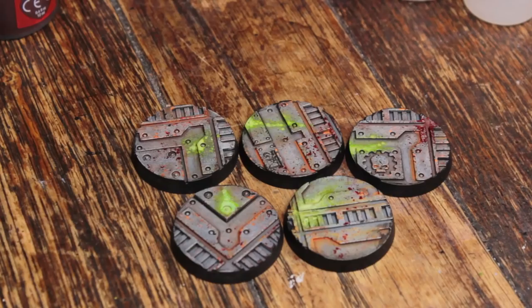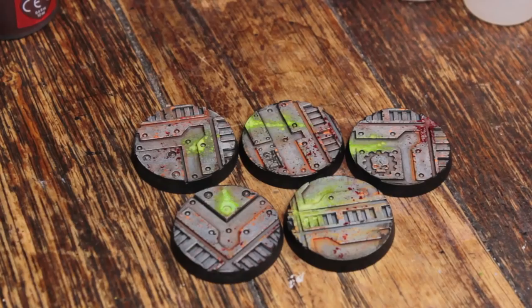And there we have it. Some simple toxic sludge grey bases. I'm going to be using these for my Goliaths actually because they keep getting shot at by Eshers and such with their poison weapons. So if you liked this model, please click the like button, share, subscribe to the channel and follow me on the social medias. And I will see you again soon. Bye.